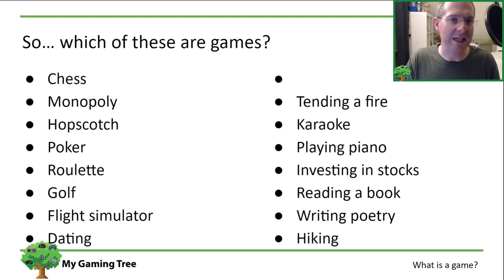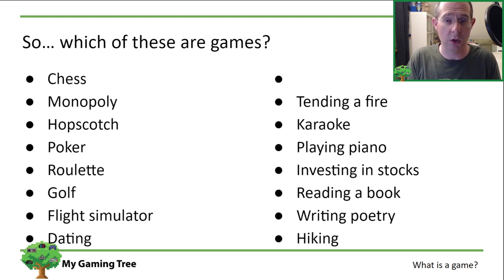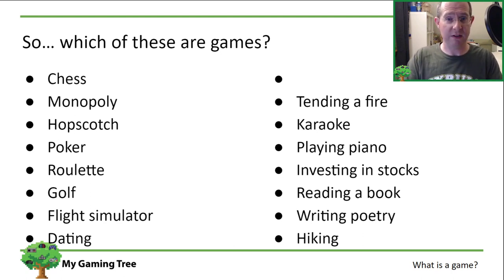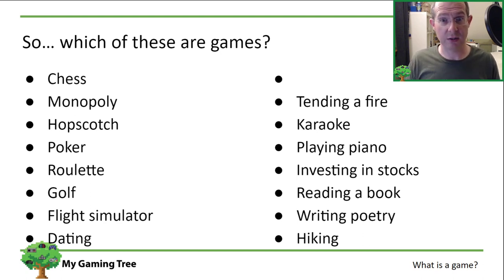Coming back to which of these are games — let's take golf. Robin Williams has a fantastic standup routine in which he talks about golf. The core of it is: what's the easiest way to get the golf ball into the hole? Well, you just walk up to the hole and drop it in, or you get in the cart and drive up and put the ball in. No — you have to stay 400 yards away. Can I just throw the ball? No, here's a stick with a little tiny head. Hit it.